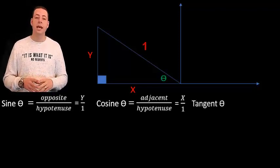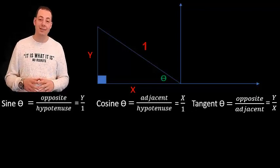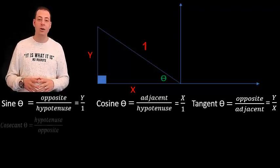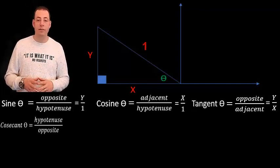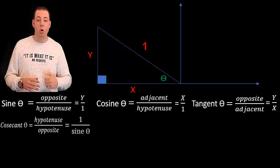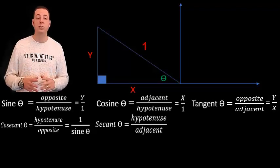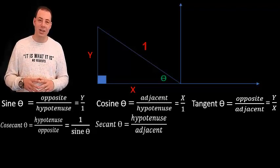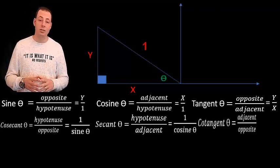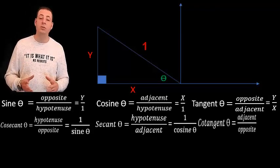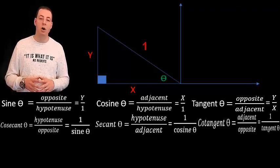Tangent of theta equals to opposite over adjacent. We have also the reciprocal identities which are cosecant of theta which equals to hypotenuse over opposite or 1 over sine theta. And the secant of theta which equals to hypotenuse over adjacent or 1 over cosine theta. And the cotangent of theta which equals to adjacent over opposite or 1 over tangent of theta.